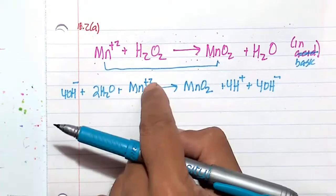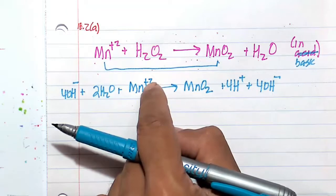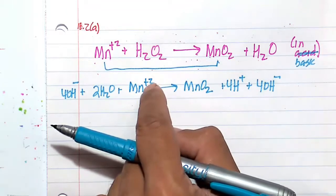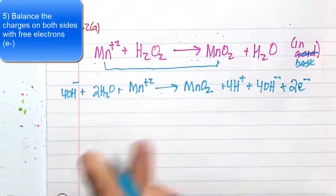Minus 4 plus 2 is minus 2. So I have a minus 2 on one side. So I will put 2 electrons to get a minus 2 on the other side.